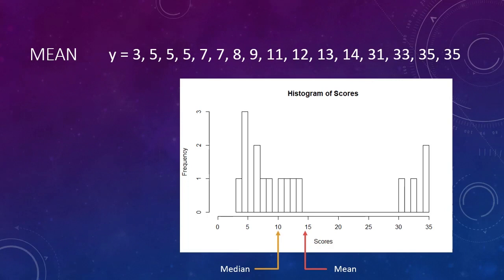This is the mean. Now, this distribution will balance. Using the median as the definition of center, every score has equal value. Using the mean as the definition of center, scores that are substantially different than other scores in the distribution will have more influence.